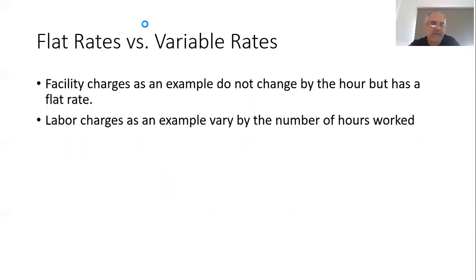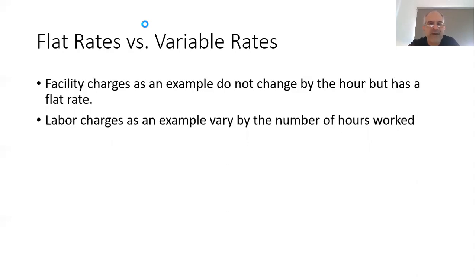We also have to take into consideration the idea of rates. We could have variable rates and flat rates. Flat rates would be, for example, facility charges — the cost of using a building. You make a contract with somebody and whether you do any work or you don't, that building is expensed at a certain rate that does not change. You could take the monthly rent and divide it by 30 to get the per-day rate, and it remains flat whether you use it or not.